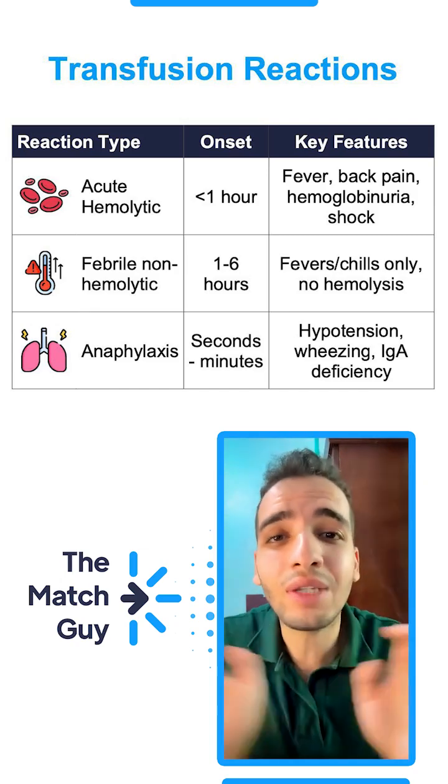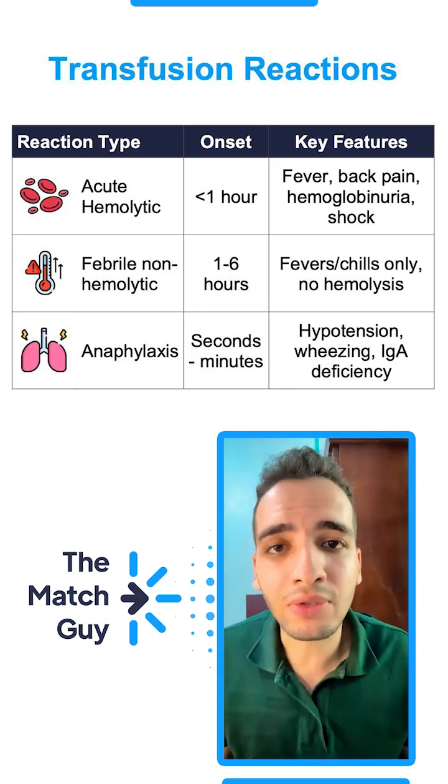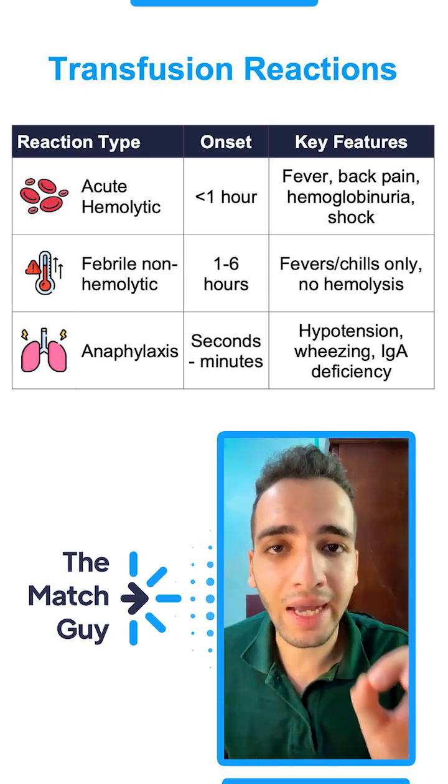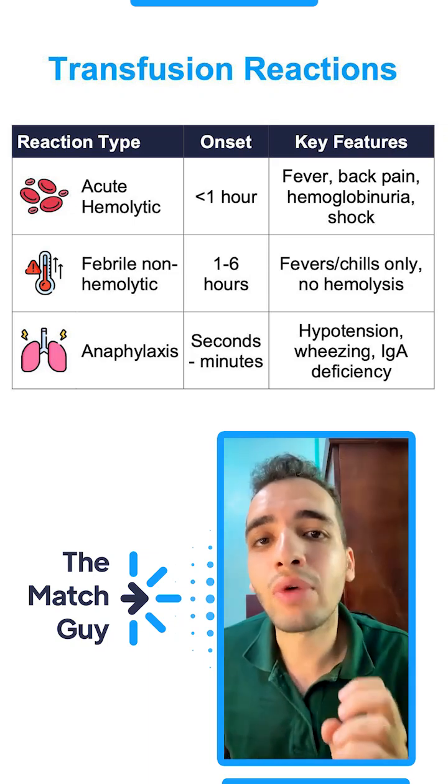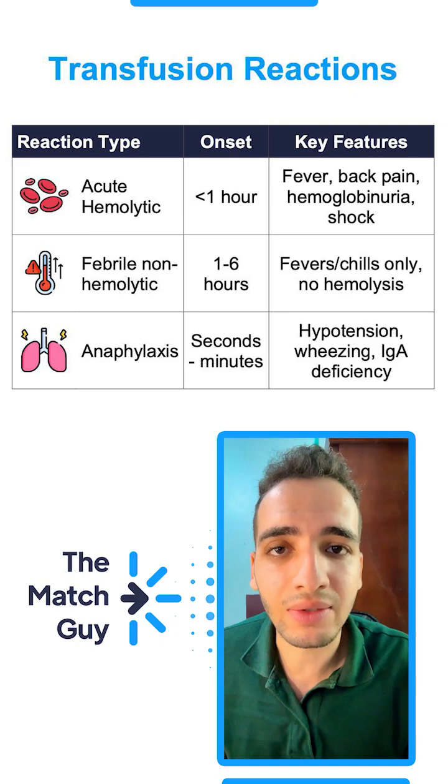If it happens from one to six hours and the patient just develops fever without any hemolysis, this is febrile non-hemolytic reaction, and it usually happens from cytokine antibodies.